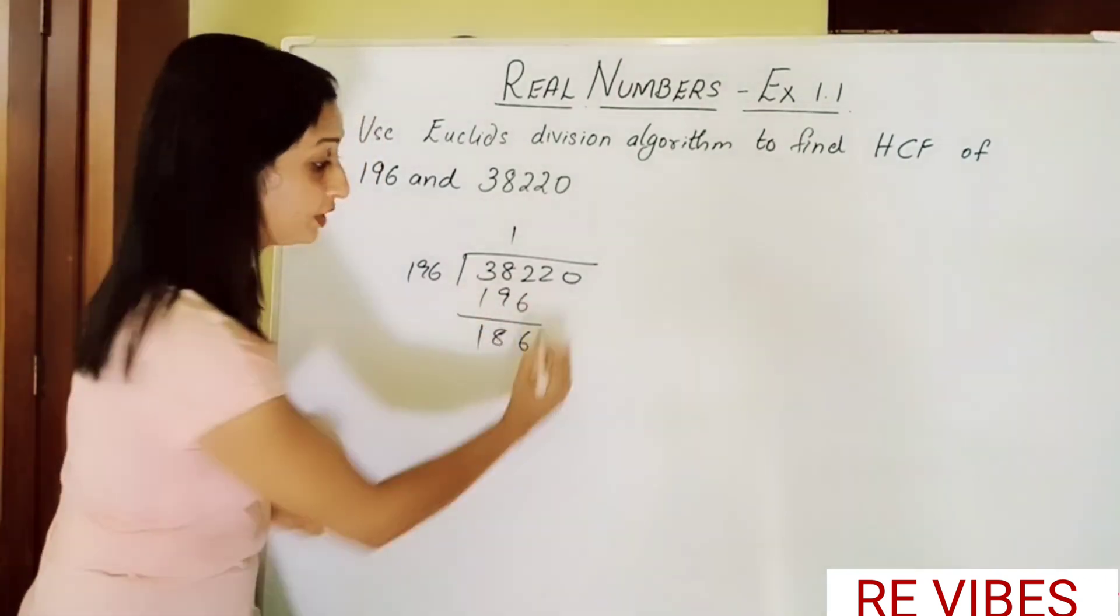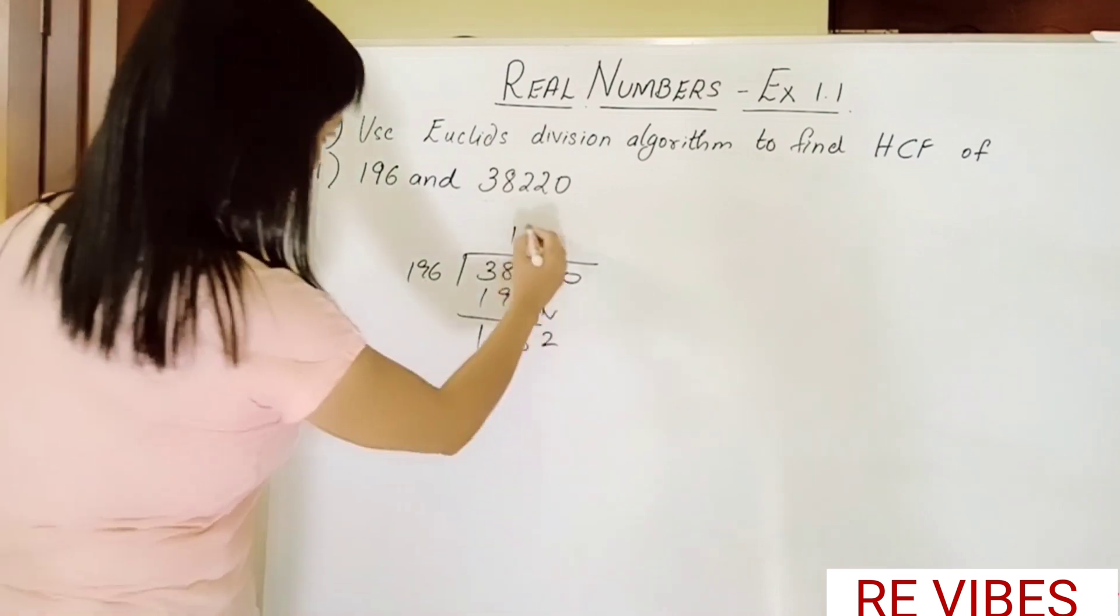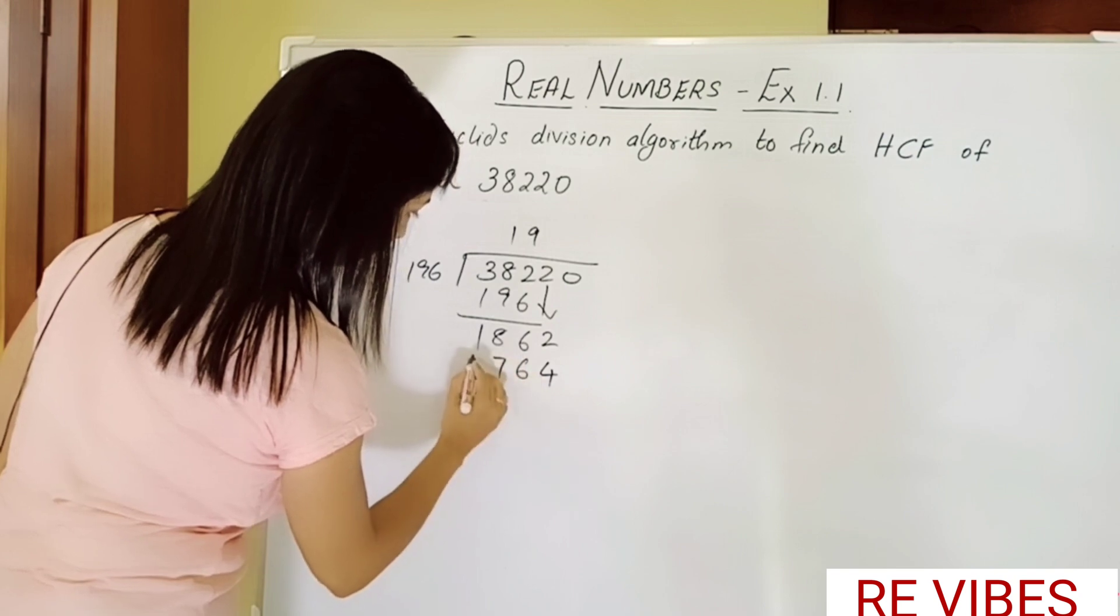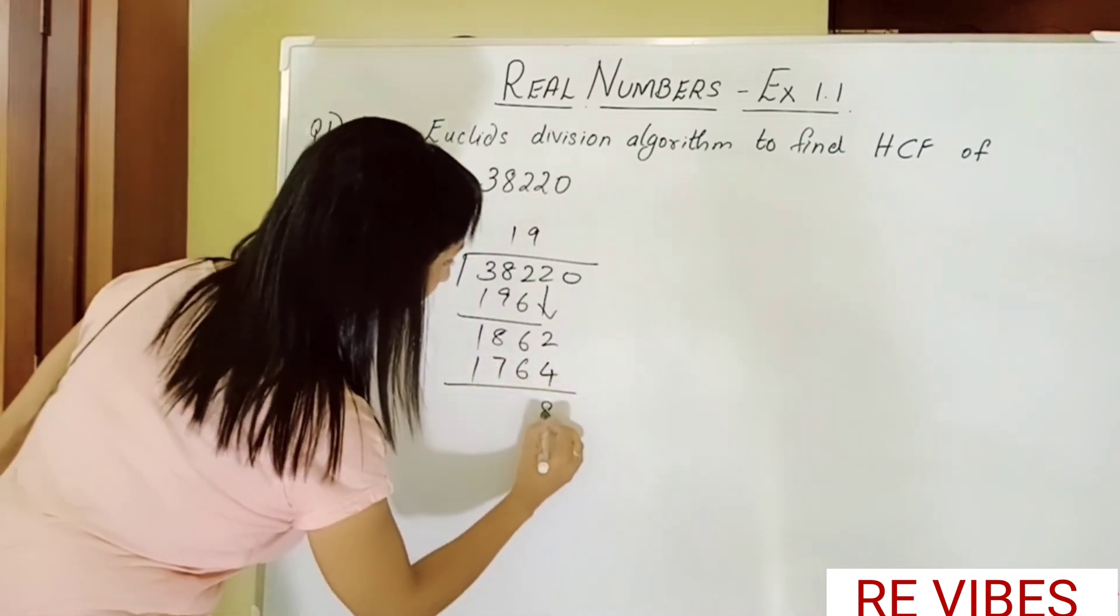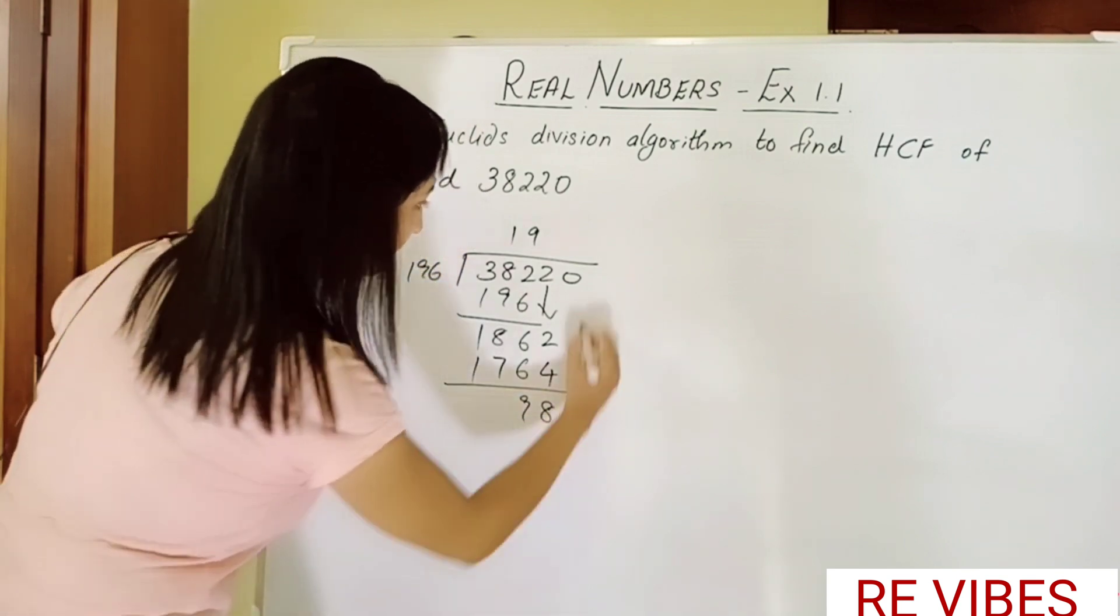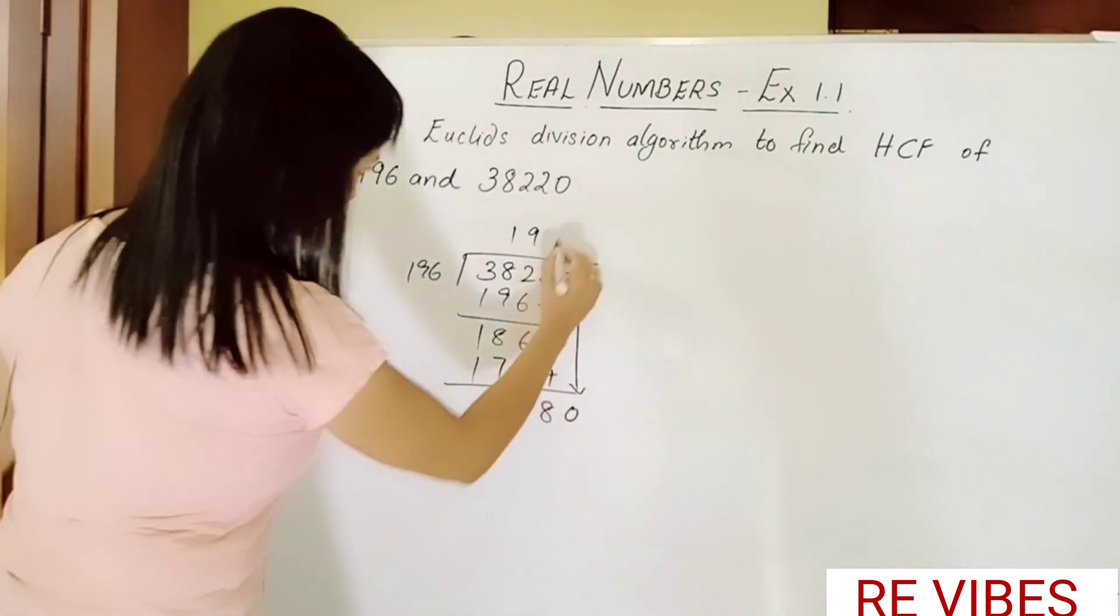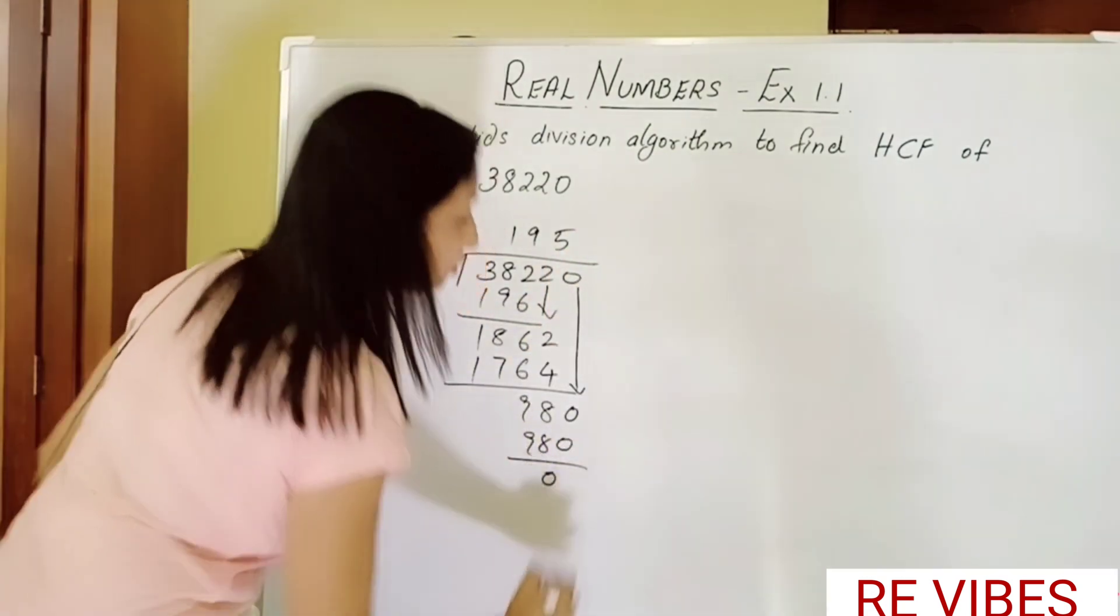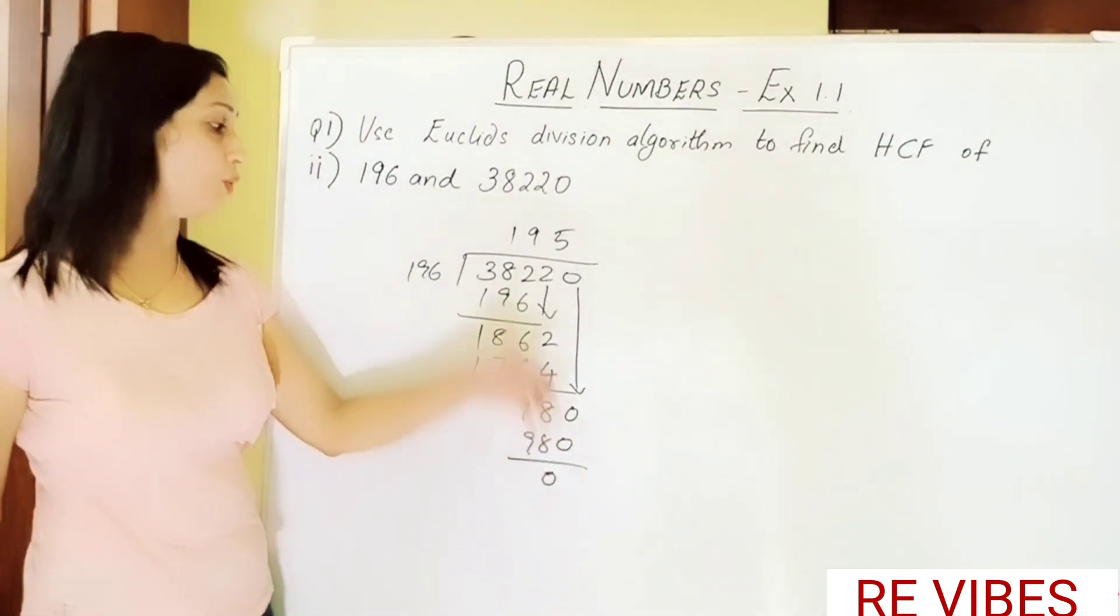So 196 nines are 1764, we get the remainder 898. Again we take the 0 down. 196 fives are 980, we get the remainder 0.